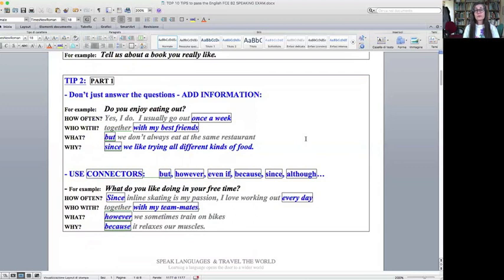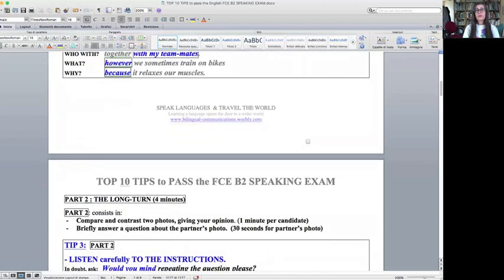Now if you've noticed, that's a very informative sentence, it's quite long and it's given a lot of information, but it's not a particularly elaborate sentence so it shouldn't be too complicated. Don't forget to use connectors: but, however, even if, because, since, although, etc. For example, what do you like doing in your free time? Since inline skating is my passion, I love working out every day together with my teammates. However, we sometimes train on bikes because it relaxes our muscles. So yes, don't just answer the question with a yes I do, no I don't. Add information.